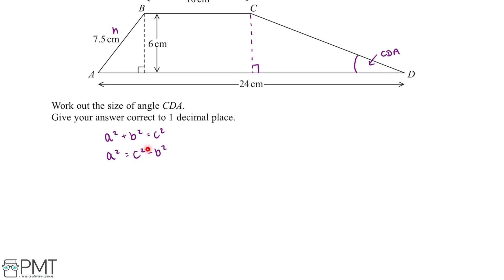So our value for C will be 7.5 cm. And then our value for B will be 6 cm. And if we put this into our calculator this tells us that A squared is equal to 20.25.